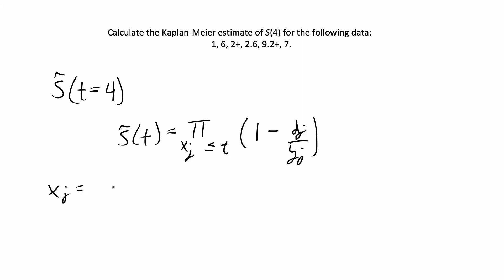Same as before, d of j is going to be equal to the number of event occurrences at time x of j. And y of j is going to be equal to the number of follow-up times that are at least as big as x of j.